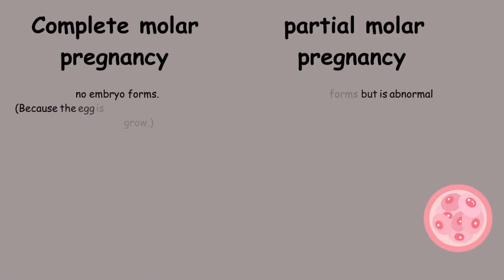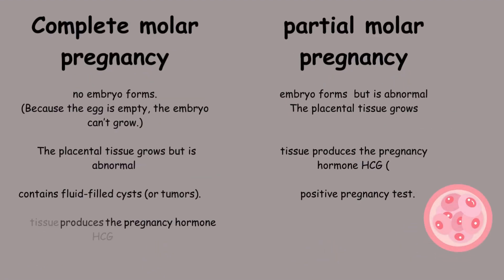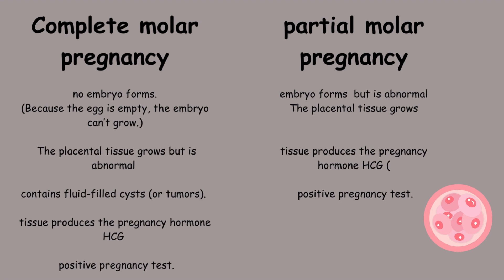In a complete molar pregnancy, no embryo forms because the egg is empty, preventing embryo development. However, placental tissue grows, albeit abnormally, containing fluid-filled cysts or tumours. This abnormal tissue still produces the pregnancy hormone HCG, resulting in a positive pregnancy test despite the absence of a viable embryo.